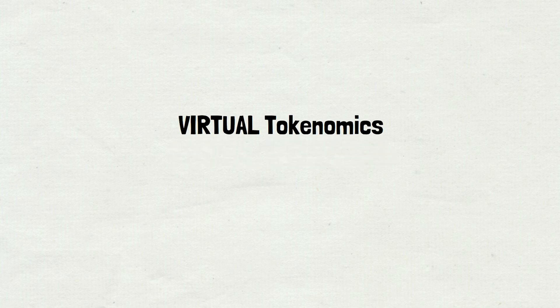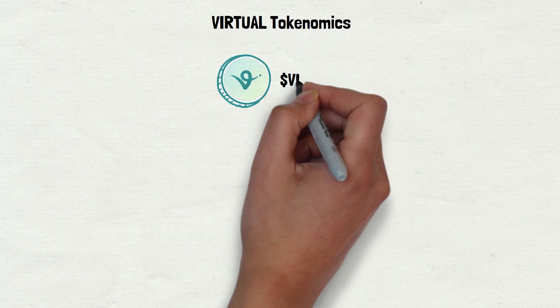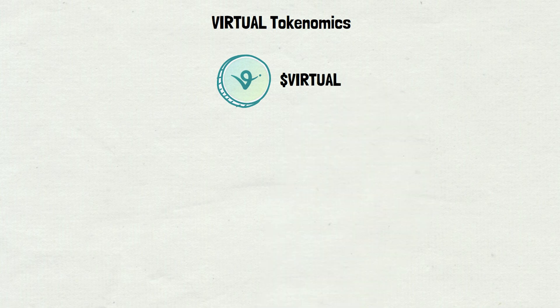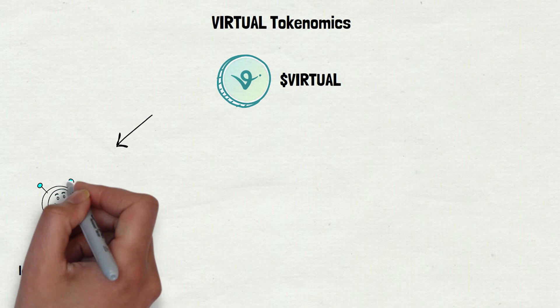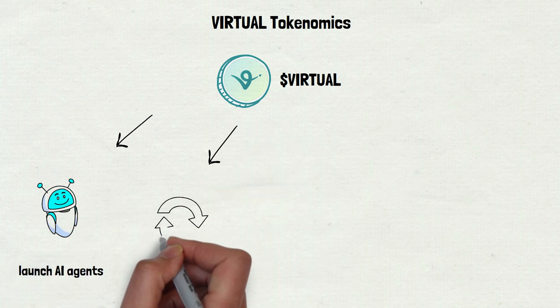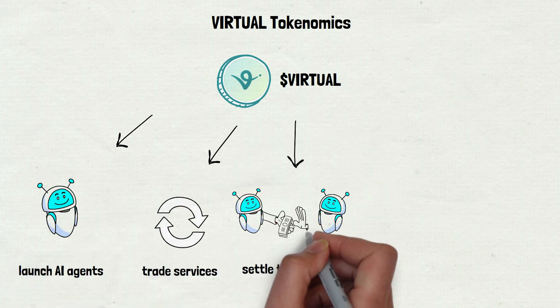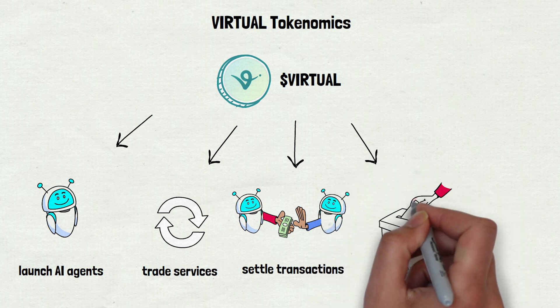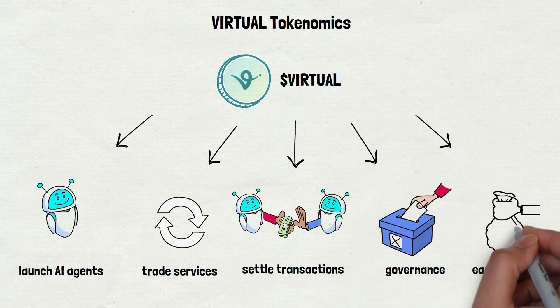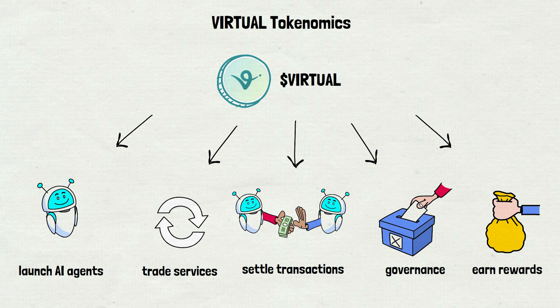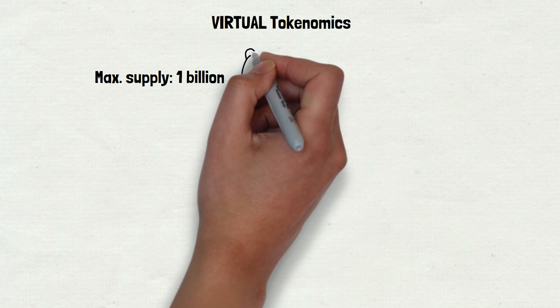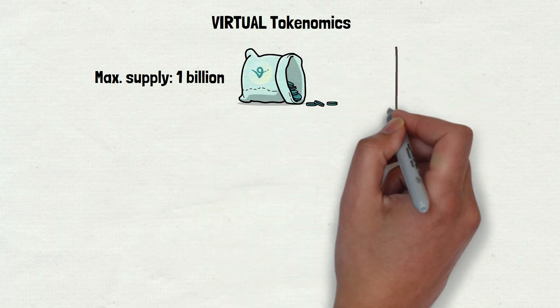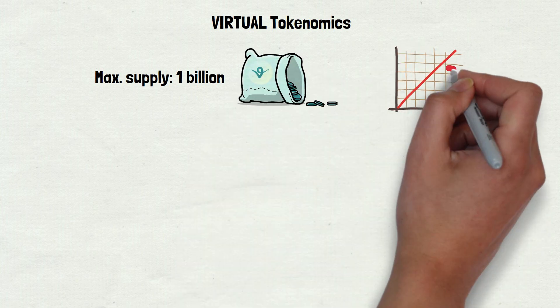But how about the tokenomics? VIRTUAL is the native token of the VIRTUALS protocol ecosystem, and it serves multiple purposes within the platform. You can use it to launch AI agents, trade services, settle transactions between agents, participate in governance through the DAO, and earn rewards for contributing to the ecosystem. VIRTUAL has a fixed total supply of 1 billion tokens, with no future inflation, meaning no new tokens will ever be minted.